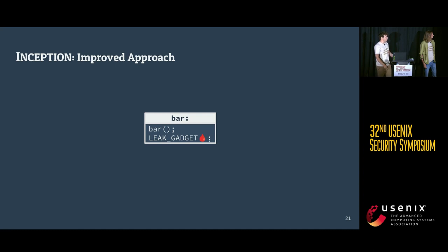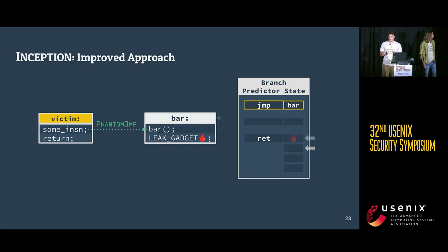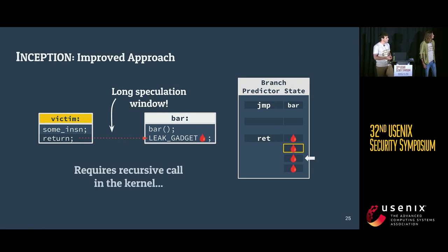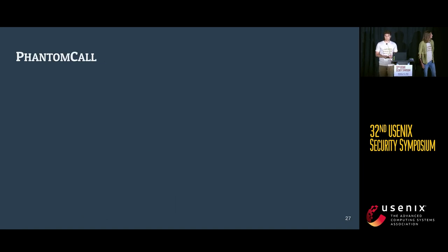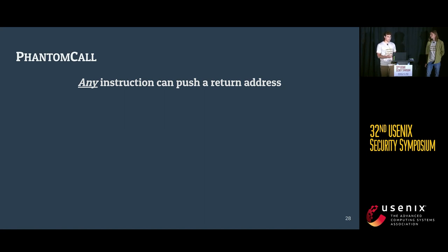One idea is to make the call to bar a recursive call. If the kernel has a function bar that starts with a call to itself, followed by a leak gadget, and the branch predictor contains a prediction to jump to bar, then executing the victim function triggers a phantom jump to bar and recursively pushes onto the return stack. The result is that it doesn't matter where the top-of-stack pointer is — the next return gives a long speculation window executing the leak gadget. But a recursive call is unlikely to be found in the kernel. During our research, we found that AMD CPUs actually push onto the return stack even before confirming there is actually a call there, meaning we can make any instruction push onto the return stack via inserted predictions — this is a phantom call.